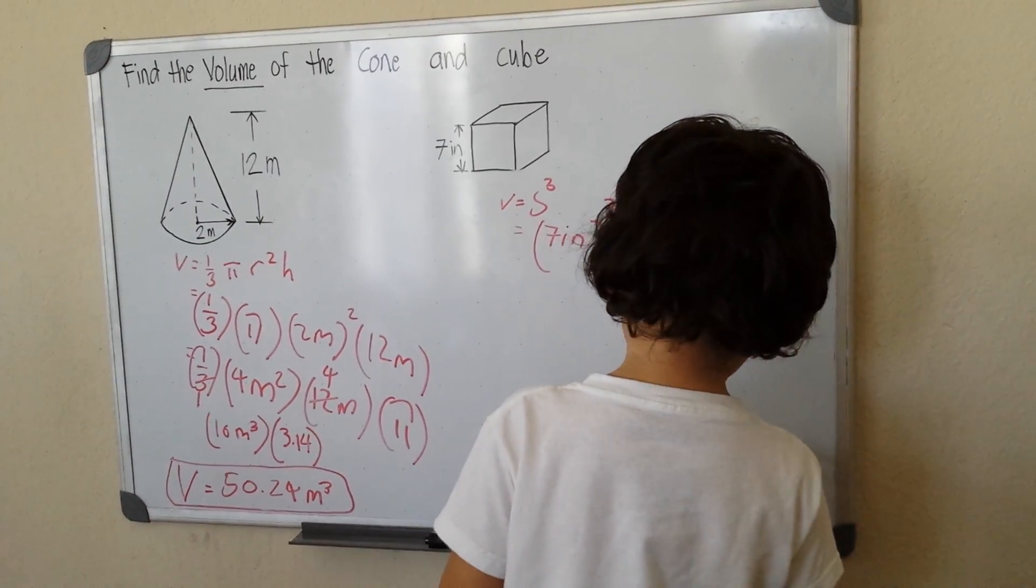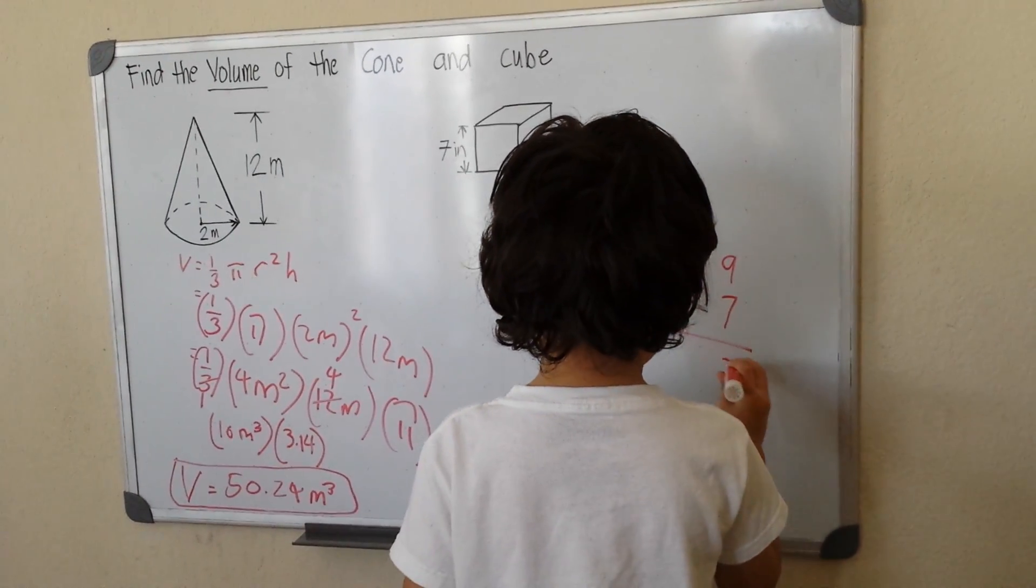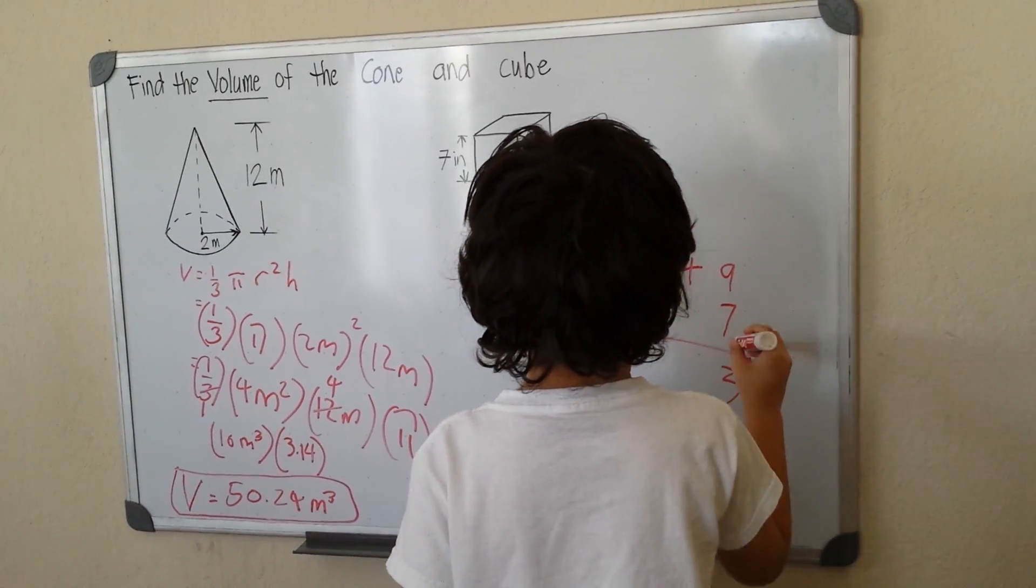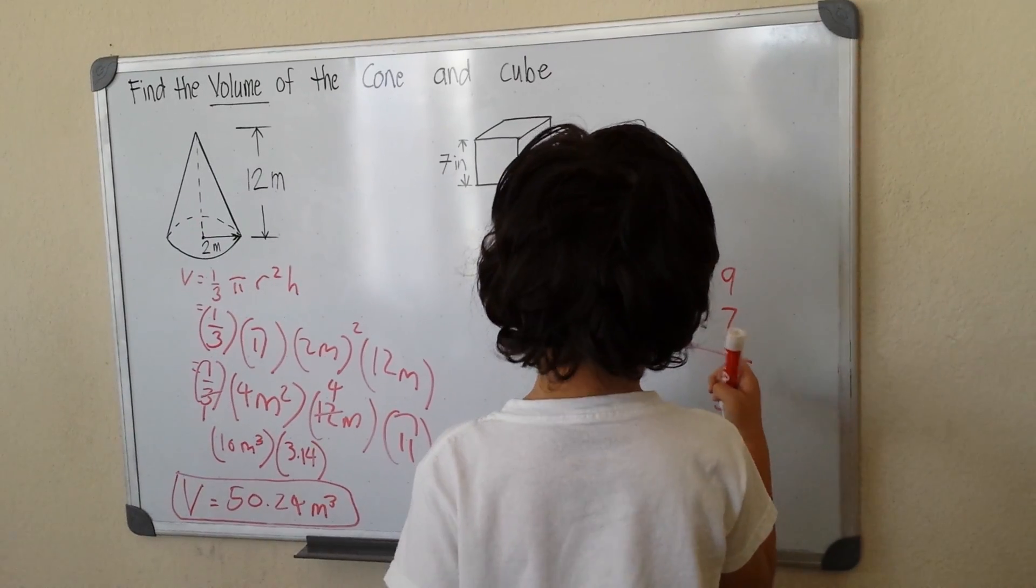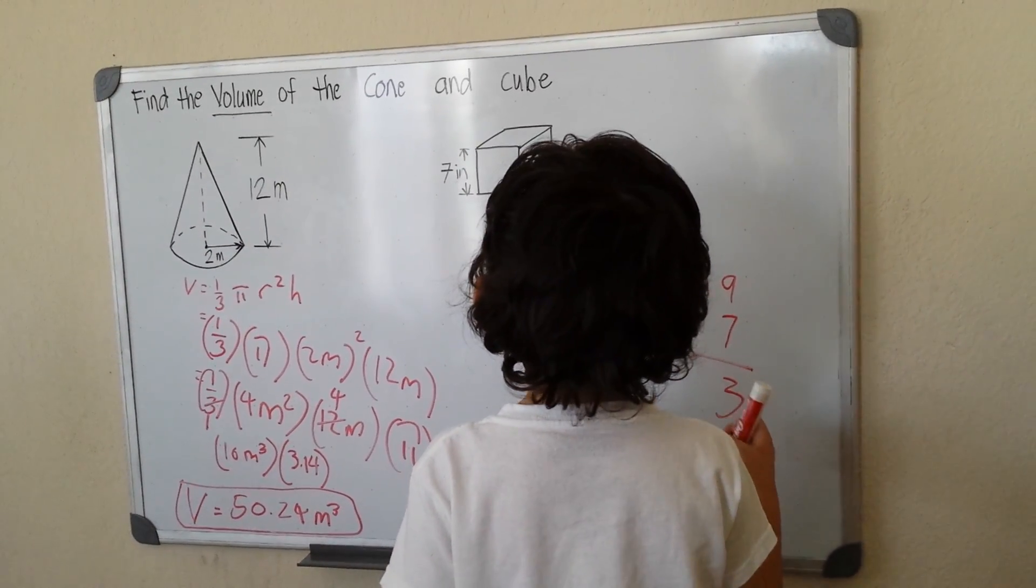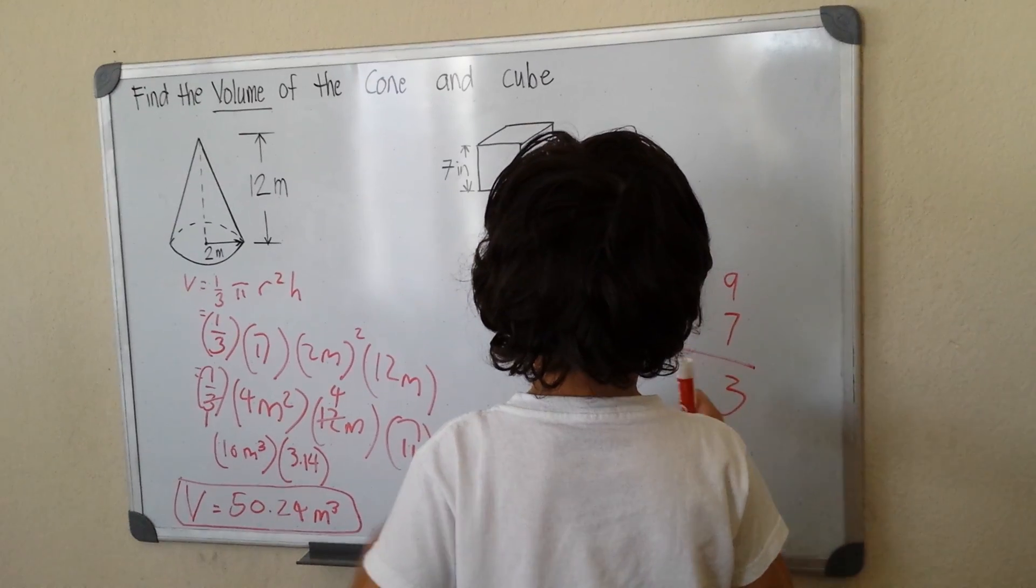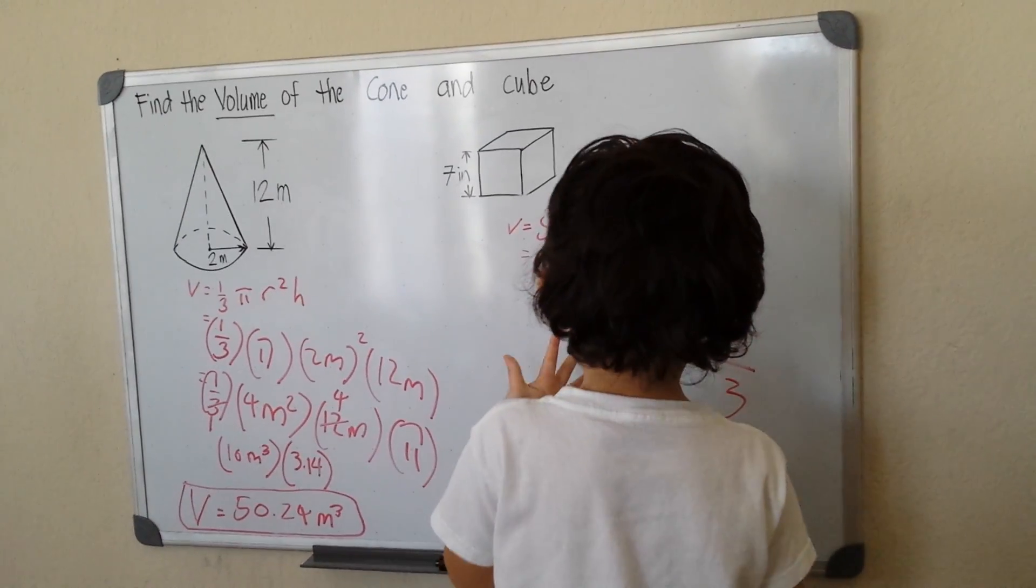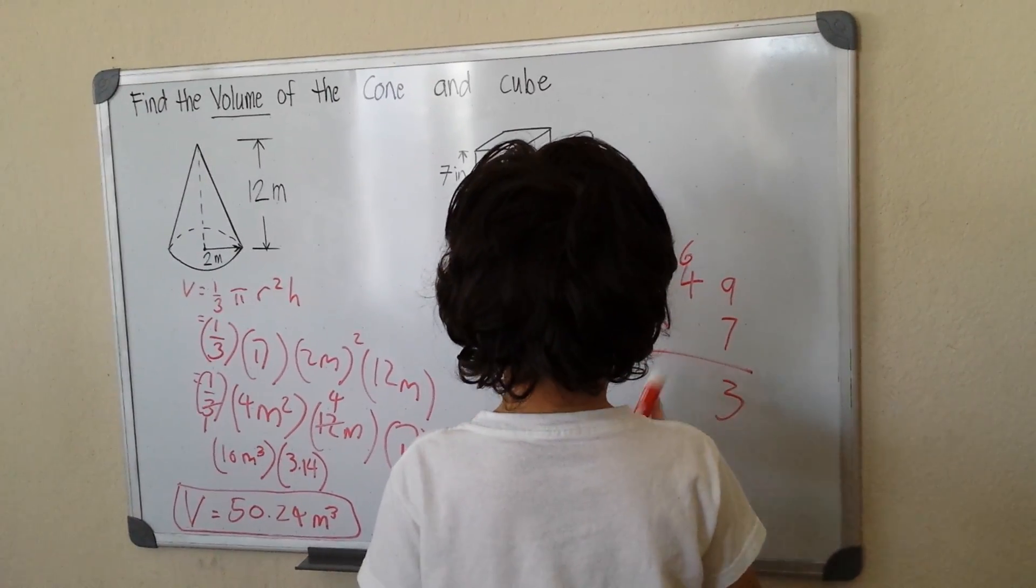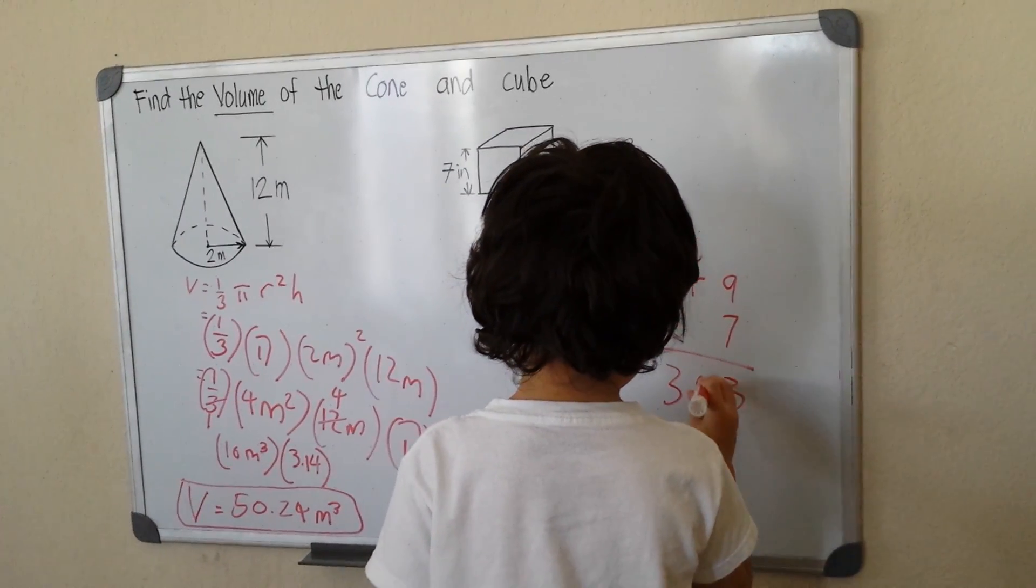7 times 4 is 28, plus 6. Let me count: 28, 29, 30, 31, 32, 33, 34. So I'm correct.